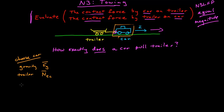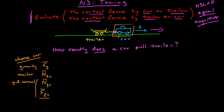The only other thing in contact with the car is the ground. That's a contact force, and I'm going to break that into the normal force of the ground on the car — I can break contact forces into normal and friction, perpendicular and parallel to the surface. So I'll call that the normal force of the ground on the car, and then I have the force of friction on the car associated with the contact force from the ground.